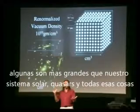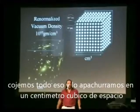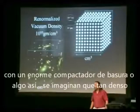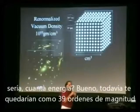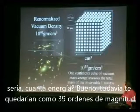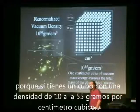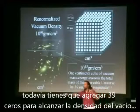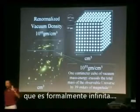We grab all that stuff — quasars and everything — and squash it all into a centimeter cube of space with a huge trash compactor. Imagine how dense that would be. Well, you would still be off by some 39 orders of magnitude, because you'd have a density of 10 to the 55th grams per centimeter cube. You'd still need to add 39 zeros to get to the density of the vacuum, which is formally infinite.